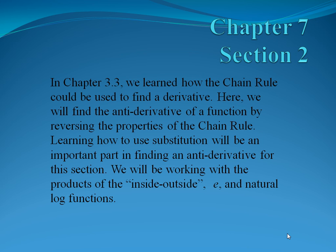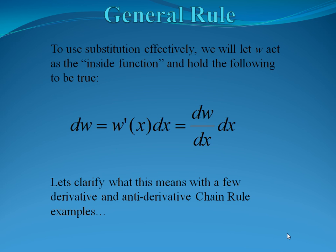We will be working with the products of the inside-outside rule and the natural log functions. To use substitution effectively, we will let w act as the inside function and hold the following to be true: the derivative of w, w prime of x dx, is equivalent to dw over dx times dx. Let's clarify what this means with a few derivatives and antiderivative chain rule examples.